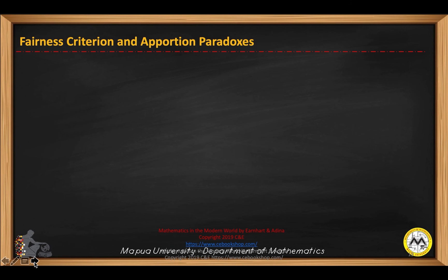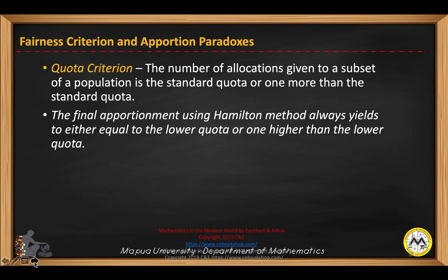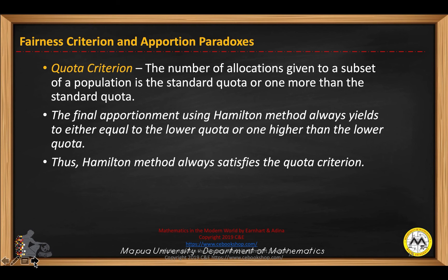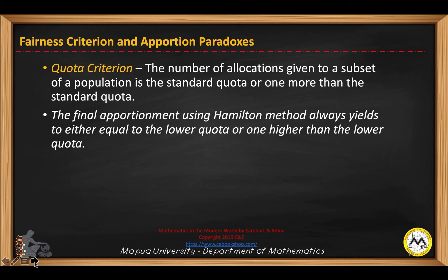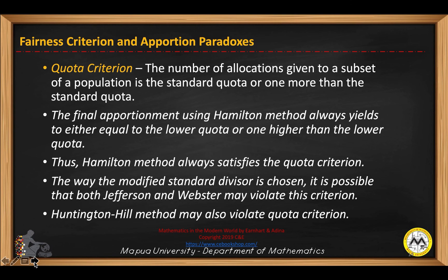Now let's talk about the fairness criterion and apportionment paradoxes. The quota criterion states that the number of allocations given to a subset of a population is the standard quota or one more than the standard quota. The Hamilton method always yields either the lower quota or one higher than the lower quota, so it always satisfies the quota criterion. However, because of how the modified standard divisor is chosen, both Jefferson and Webster may violate this criterion, and the Huntington-Hill method may also violate the quota criterion.